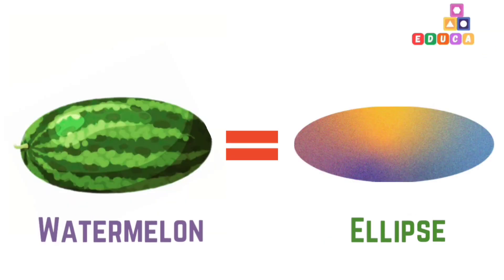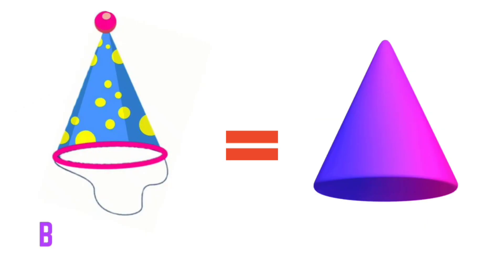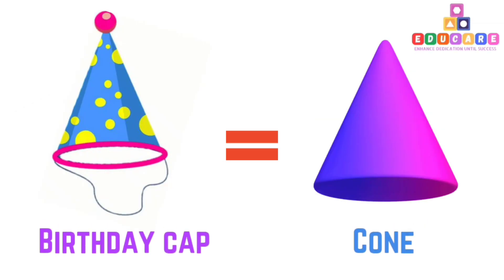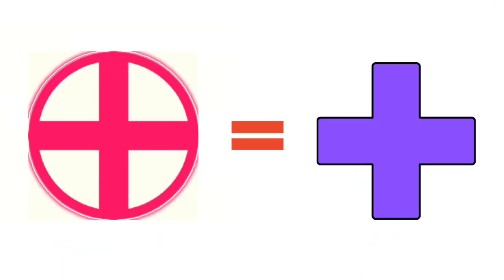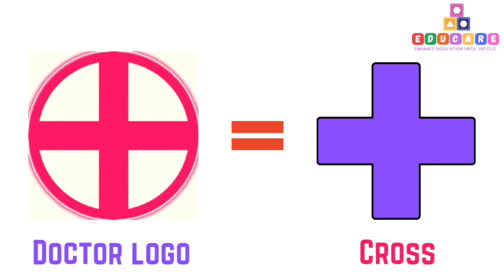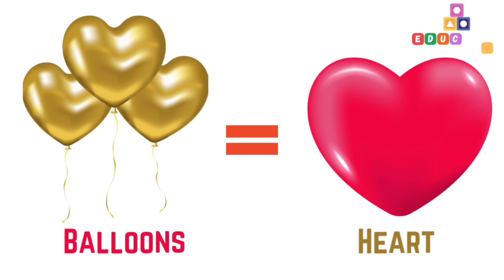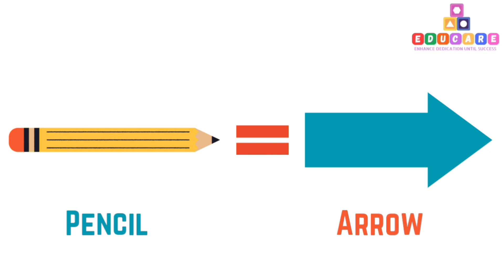Batteries are example for cylinder. Watermelon is example for ellipse. Birthday cap is example for cone. Starfish is example for star. Doctor logo is example for cross. Balloons are example for heart. Pencil is example for arrow.